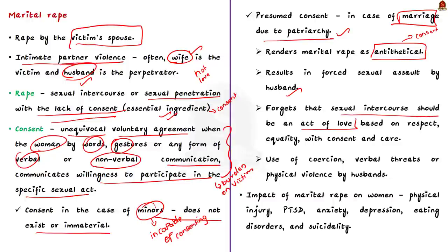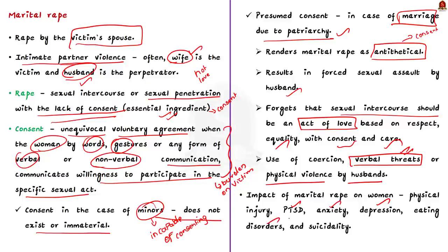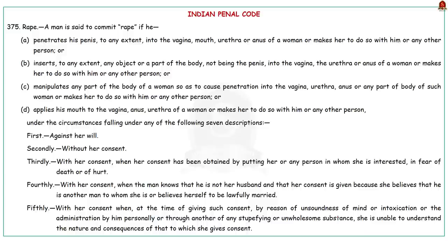Sexual intercourse among married couples should be an act of love, based on respect, equality, and care. However, not only is coercion used to commit marital rape but the woman is also subjected to verbal threats or physical violence by the husband. Marital rape affects women physically and mentally and may lead to post-traumatic stress disorder, anxiety, depression, eating disorders, and suicidal thoughts.